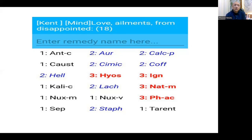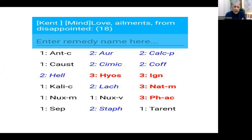Since we have so many remedies under one rubric, that cause alone is not useful for us to reach the similimum. We have to understand the differentiation between remedies: what will be the reaction of Antimonium crudum, of Aurum metallicum, of Hyoscyamus, of Ignatia? Every remedy reacts in a different manner. I'll show the sub-rubrics mentioned under this rubric in Kent's Repertory, discuss those, and then find further effects from the Synthesis Repertory.